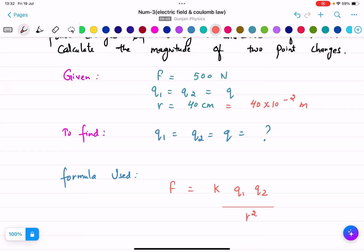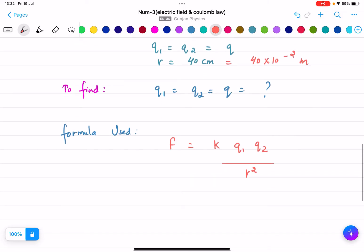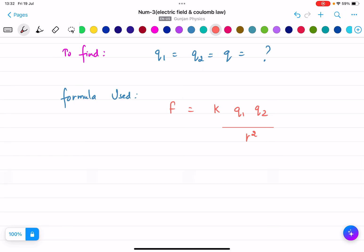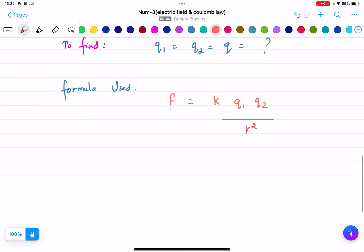We place the values. What is the force given to us? 500 newtons. K we know is 9 into 10 to the power 9. Q1 and q2 we need to find, let's say it is q, by r squared. What is r? 40 into 10 to the power minus 2 meters squared.